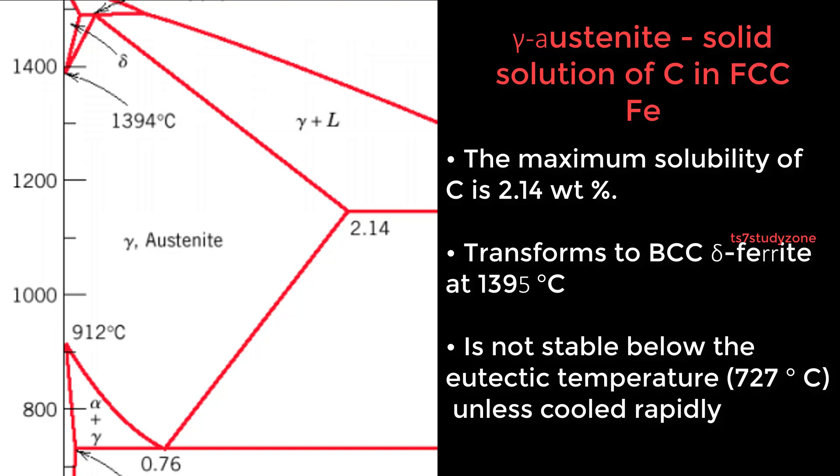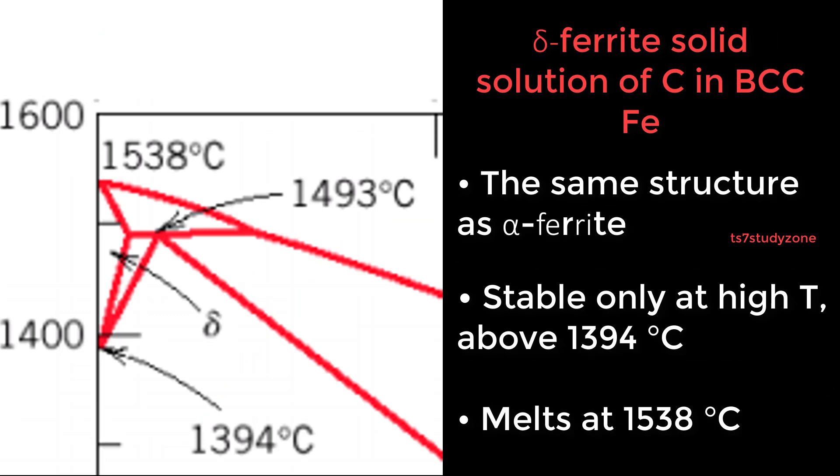Delta ferrite is a solid solution of C in BCC Fe with the same structure as alpha ferrite. It is stable only at high temperatures above 1394 degrees Celsius and melts at 1538 degrees Celsius.